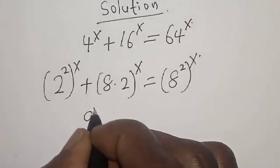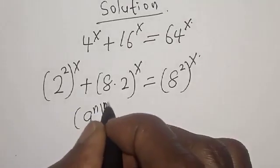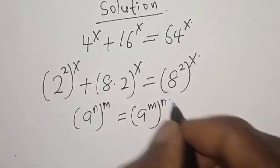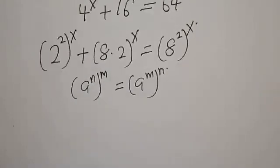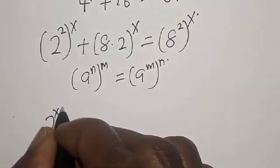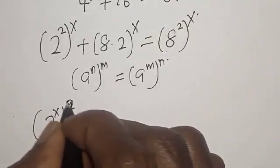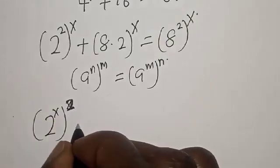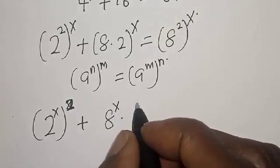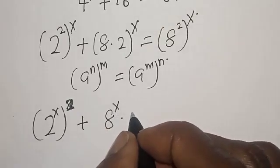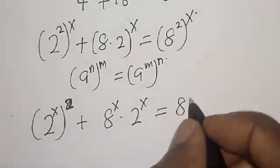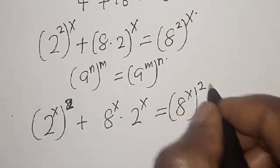Note that a raised to power n, raised to power m, is equal to a raised to power m raised to power n. Now 2 raised to power s, all squared, plus 8 raised to power x, is equal to 8 raised to power s squared.